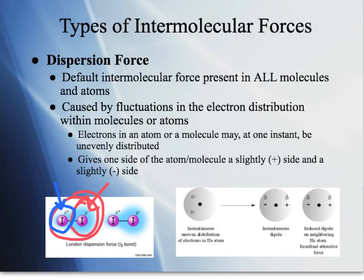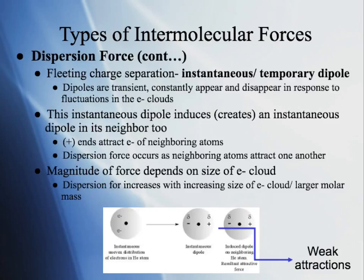We call this an instantaneous or temporary dipole, because it's just a millisecond kind of lapse. Over time, electrons jump from side to side in a molecule or atom all the time, so it's very transient.